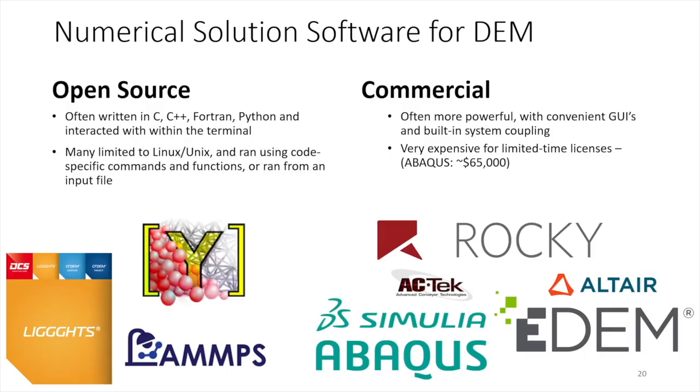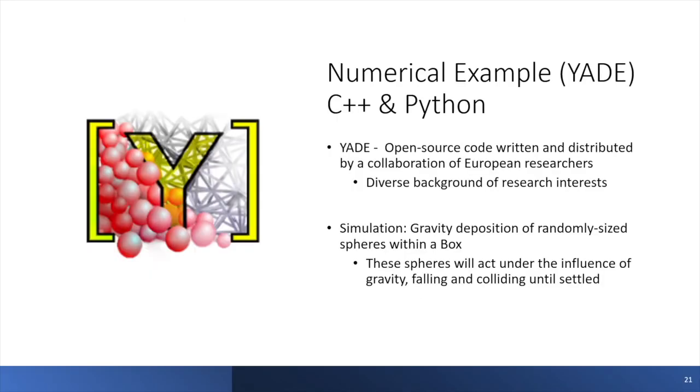So whenever it comes to picking a software for a project involving discrete element analysis, there are many choices and each has their own advantages and disadvantages. The main distinction is the price of the code, which varies greatly between free for open source codes, up to tens of thousands for commercial and specialized software. Open source codes are largely run within the terminal using commands and user-generated scripts and are largely simpler programs with more limited capabilities. Commercial codes are usually more specialized or complex, and they allow for the coupling of methods and are often accompanied by a graphical user interface. The code utilized for our numerical example of DEM analysis is YADE, which stands for Yet Another Dynamic Engine.